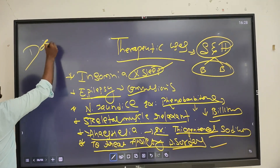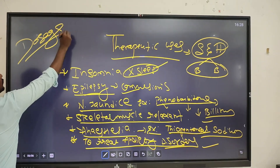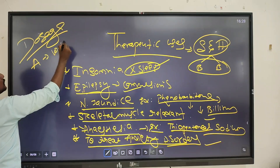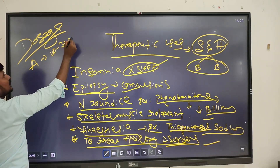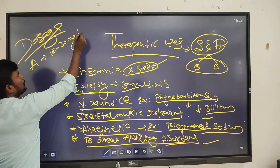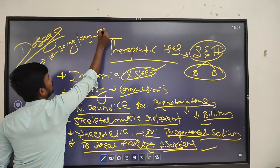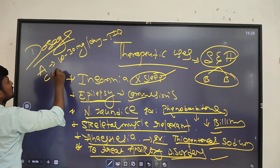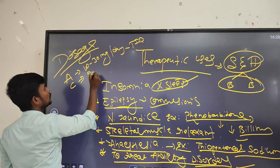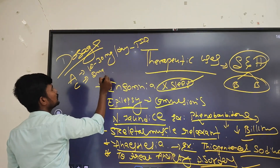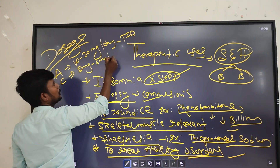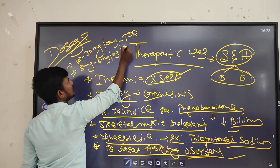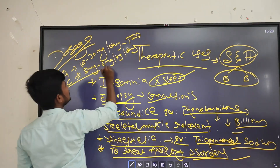Doses: for adults, the dose is about 10 to 30 mg per day - that is the total amount of daily dose. For children, the dose is reduced to 2 mg to 6 mg per kg per day.